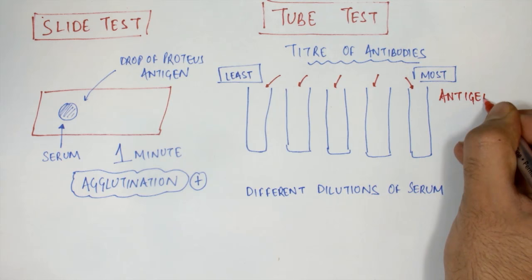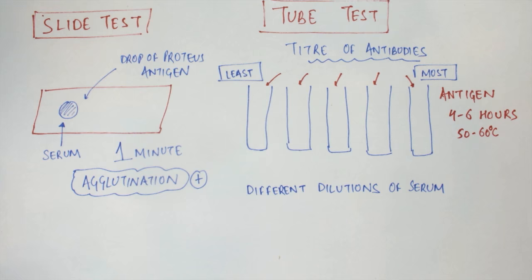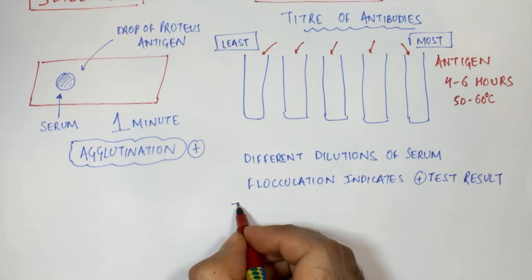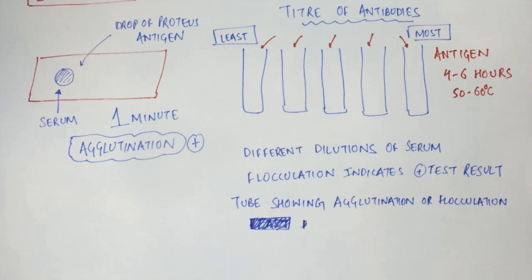We incubate these test tubes for 4 to 6 hours at 50 to 60 degrees Celsius. Flocculation indicates that the test is positive, and the test tube with the most diluted serum which shows flocculation or agglutination indicates the titer of the antibodies present in the serum.